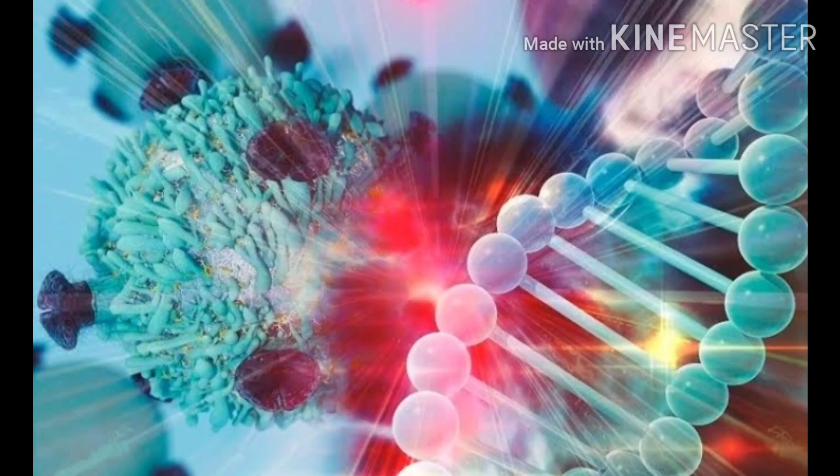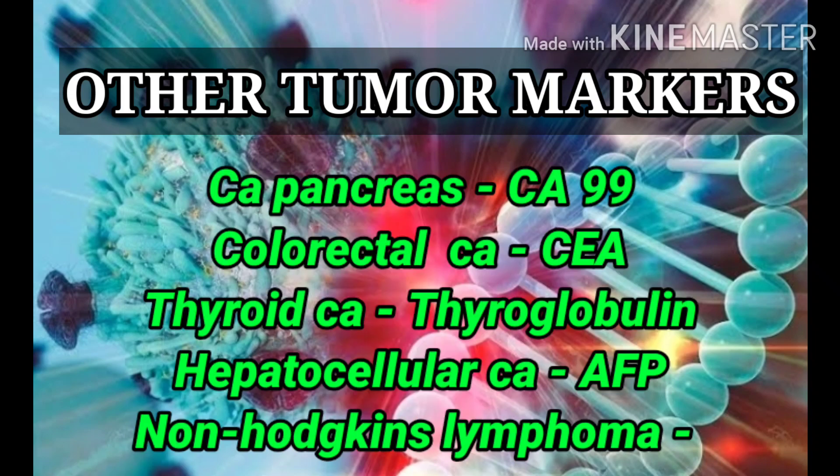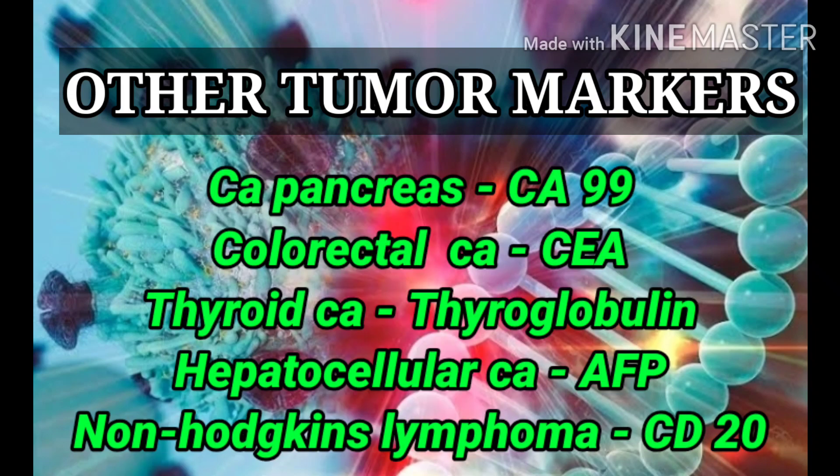We can see other tumor markers also. In the case of CA pancreas: CA19-9; colorectal carcinoma: CEA; thyroid cancer: thyroglobulin; hepatocellular carcinoma: AFP; and non-Hodgkin's lymphoma: CD20.